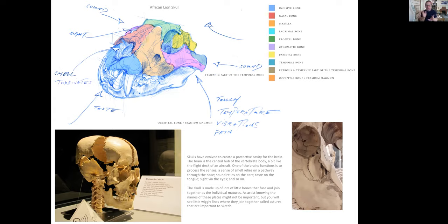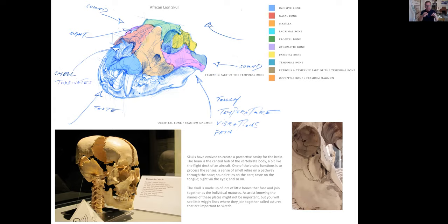For example, bighorn sheep bash into each other in their rocky habitats at up to 20 miles an hour as males try to exert dominance to attract females. You'll see very wide wiggly sutures in their bone plates. A Nile crocodile taking a water buffalo into a death roll experiences such torsional forces through the skull that it too has very wide sutures for additional flexibility. But if you look at a gharial — a freshwater fish-eating crocodile — the sutures are almost impossible to see, nearly completely joined up. Generally, if animals have a more boisterous lifestyle, you'll see wider sutures in the bone plates.